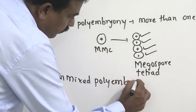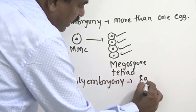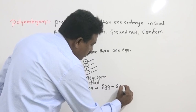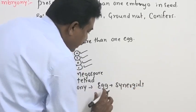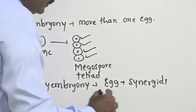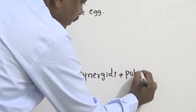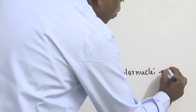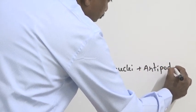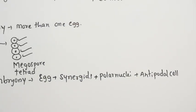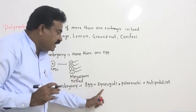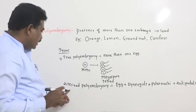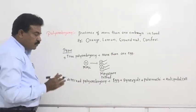In mixed polyembryony, along with egg, other cells are present in an embryo sac. Suppose, egg side, we have synergids. Synergids and egg fertilized, many embryos are formed. Egg and polar nuclei may fertilize and form many embryo. Or even antipodal cells may fertilize along with egg, form polyembryony. Here, the egg subsidiary cells like synergids, polar nuclei, antipodal cells, if accidentally fertilized, at that time, mixed polyembryony takes place.